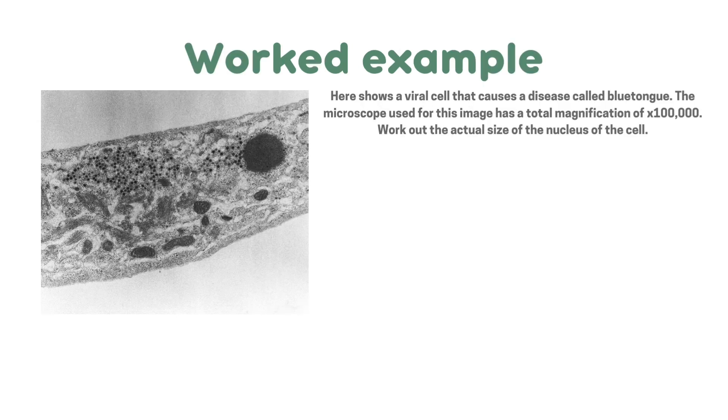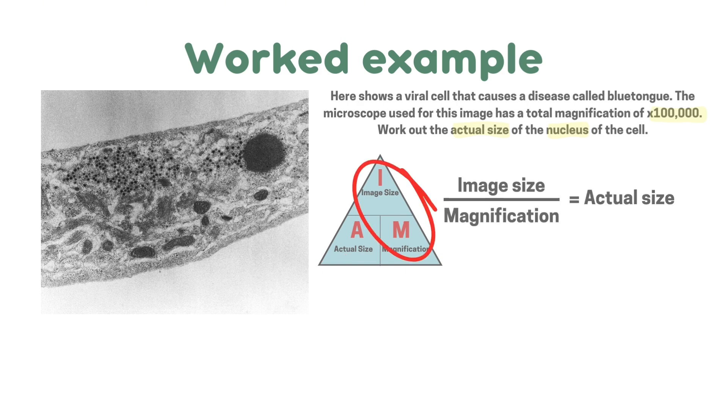Now here is a worked example. Here shows a viral cell that causes a disease called blue tongue. The microscope used for this image has a total magnification of a hundred thousand times. Work out the actual size of the nucleus of the cell. So let's highlight the important information given. We're given the magnification and it's telling us we need to work out the actual size of the nucleus. Now let's bring in our magnification triangle. We know we don't have the actual size of the nucleus. We've got the magnification and we can get the image size by using a ruler. So the image size divided by magnification equals actual size.